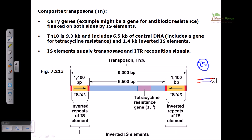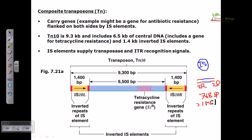An IS element has two inverted repeat regions flanked at both ends and one central gene region. This is the actual structure of IS elements. These IS elements are pretty small — like 768 bp only, so less than 1 kb. We can see this in the case of the galactose operon for bacterial cells. This tells us why IS elements are simple: only one gene in the middle and two inverted repeats at the ends. These inverted repeats help the element be incorporated, and the gene portion codes for the protein transposase, which is the key protein during transposition of IS elements.